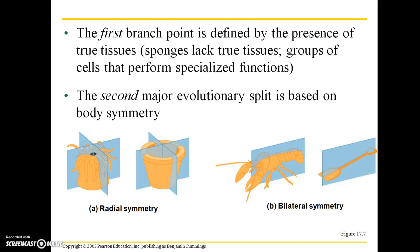The first branch point is defined by the presence of true tissues. Sponges lack true tissues, which are groups of cells that perform specialized functions. Sponges do not have tissues organized into specialized functional capabilities — they don't have organ systems or anything we usually think of when talking about animal complexity.